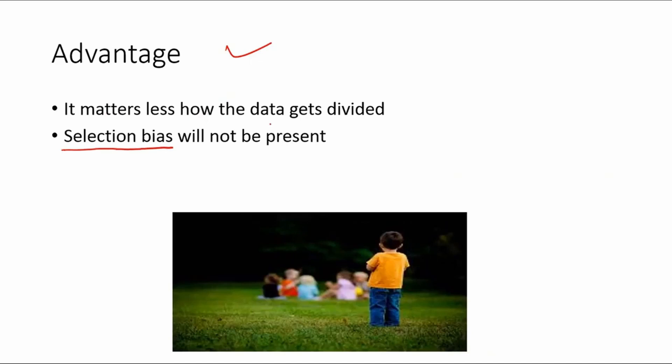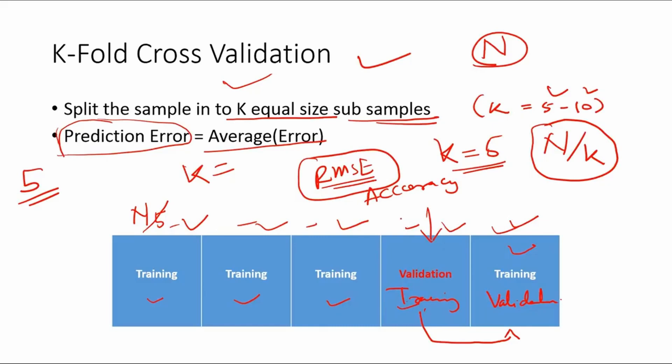It doesn't matter how the data gets divided, so that selection bias will not be there. Holdout sample cross validation—the validation set that you are taking is completely different from the training set. It's completely different. The data points in the validation set will never be present in the training set.